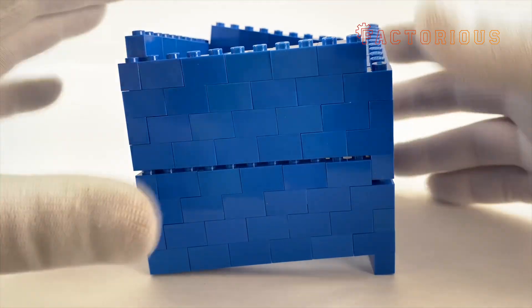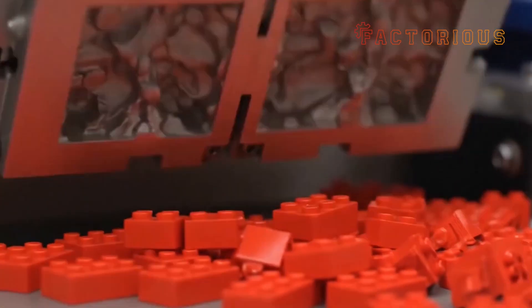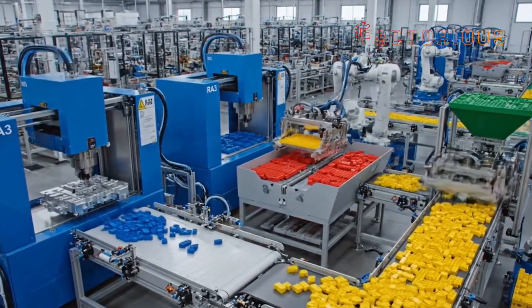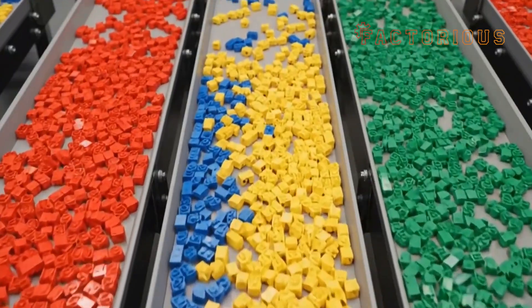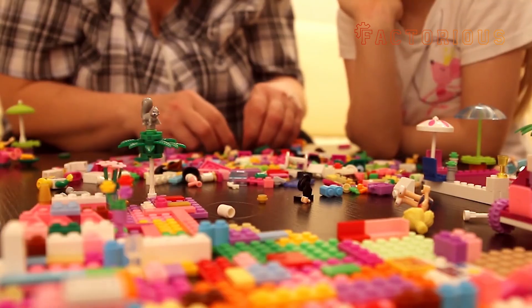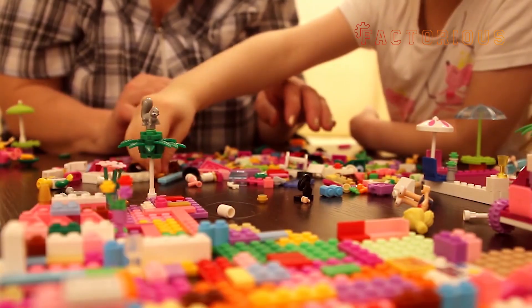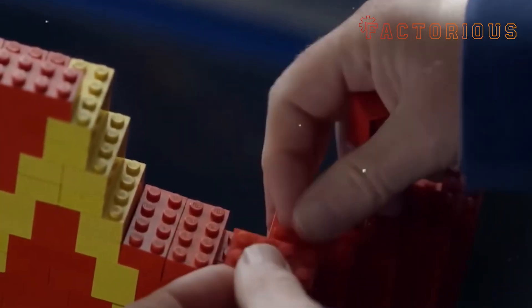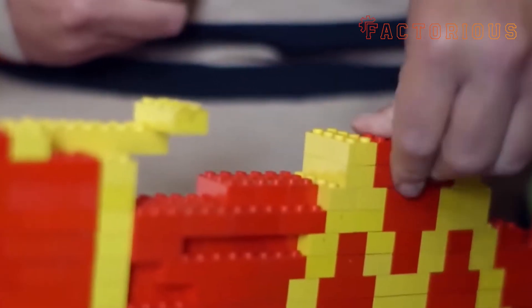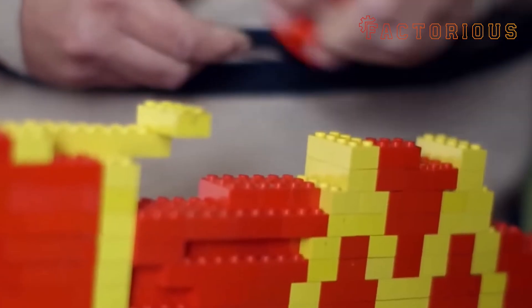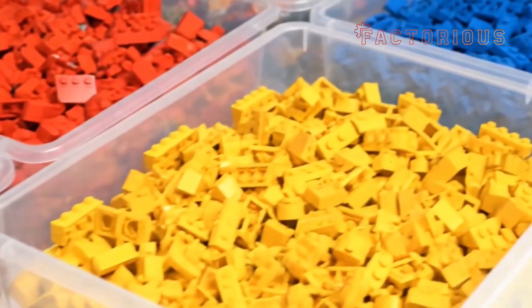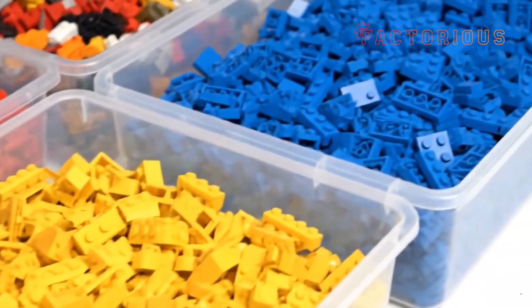Here's something most people don't realize. If you took all the Lego pieces ever produced and shared them evenly among every person on Earth, each person would have about 80 pieces. That's how widespread these tiny blocks are. And despite being made from oil, Lego might just be one of the most sustainable toys ever created. Because it never really gets thrown away. Every piece can be reused, rebuilt, and reimagined endlessly.